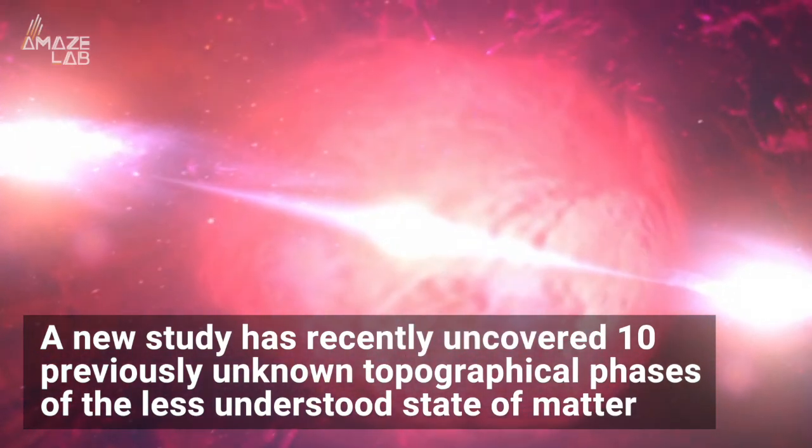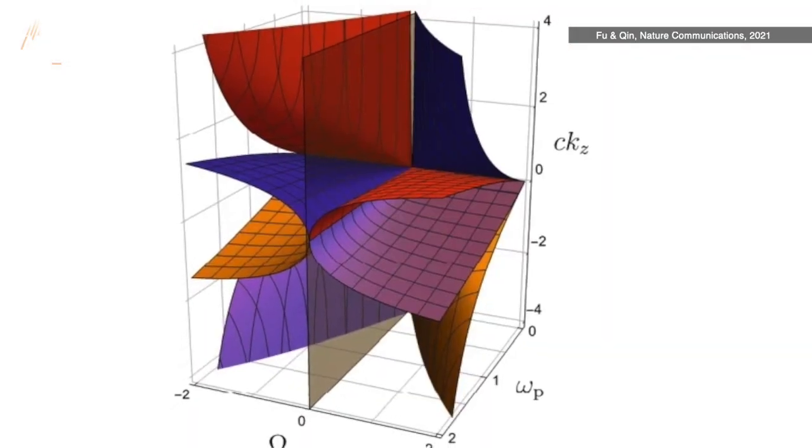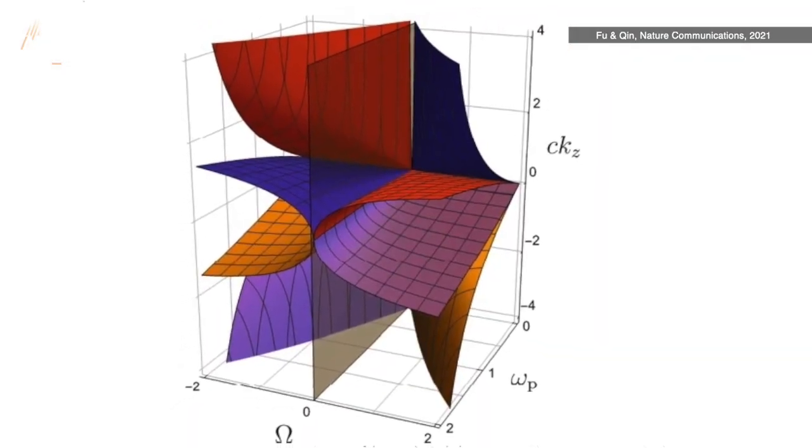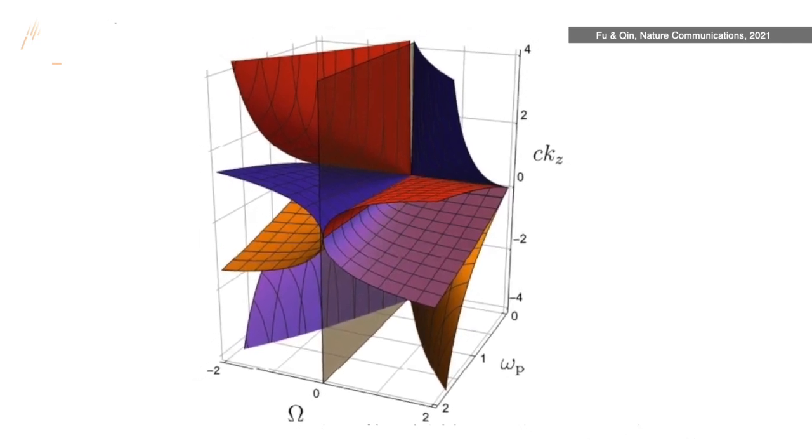In cold plasma in a uniform magnetic field, these are what those 10 different phases look like on a three-dimensional plane. So how does this help scientists better understand these states?